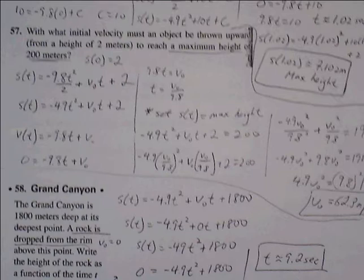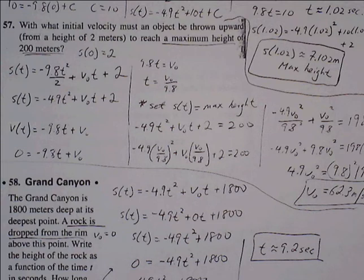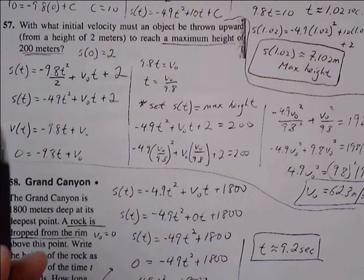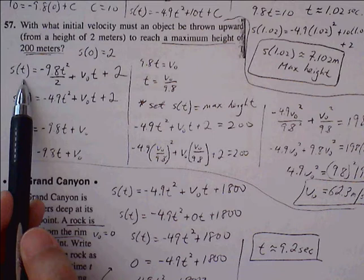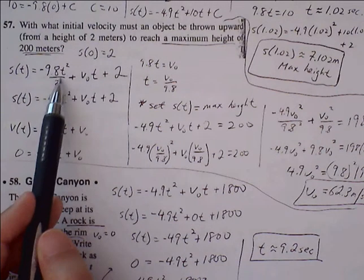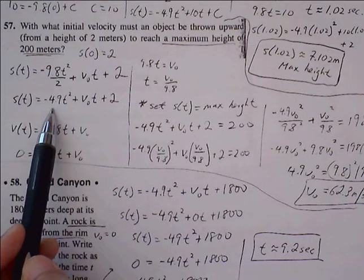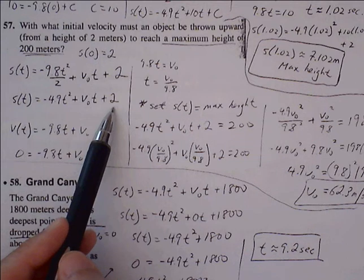Problem 57: With what initial velocity must an object be thrown upward to reach a maximum height of 200 meters? We have our position function here. We can represent it as -9.8t² over 2, or -4.9t² plus v₀t plus our initial position.